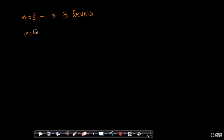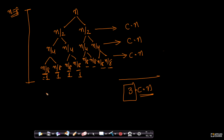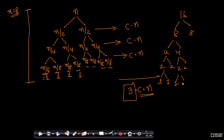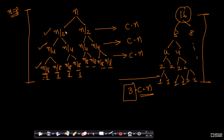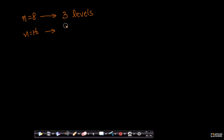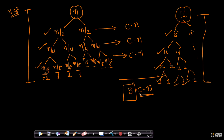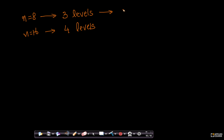When n = 16, the array is broken into 8 and 8, then into 4s, then 2s, then 1s — that is 4 levels deep, giving 4·c·n. When n = 32, you go 5 levels deep: 32 → 16 → 8 → 4 → 2 → 1, giving 5·c·n.